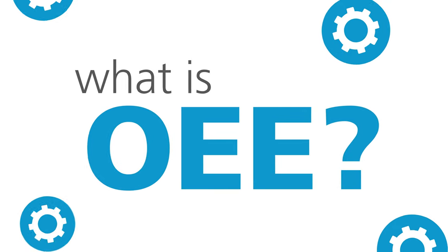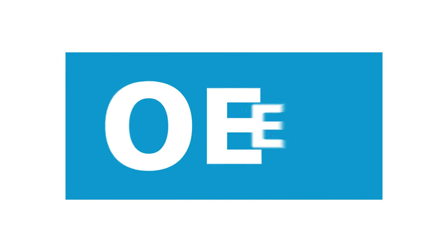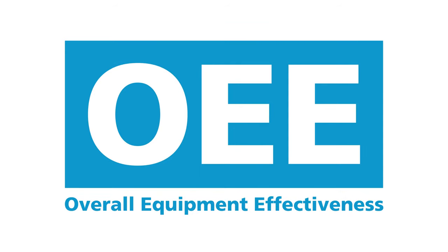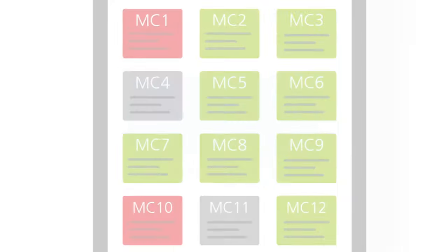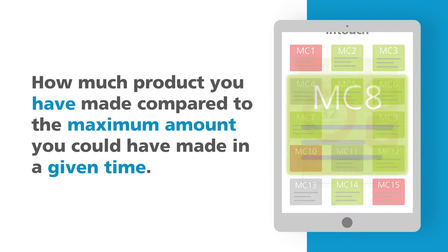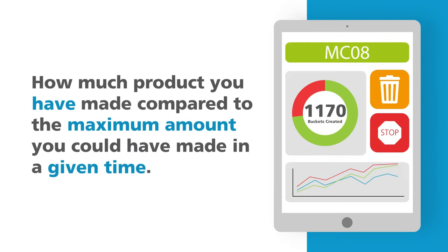What is OEE? OEE, or overall equipment effectiveness, is simply an expression of how much product you have made compared to the maximum amount you could have made within a given time.